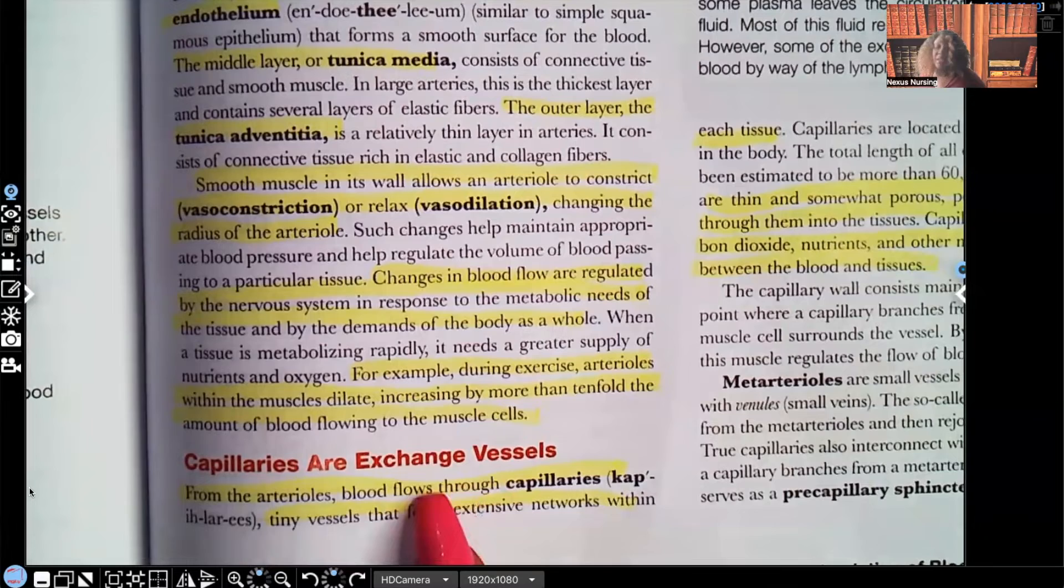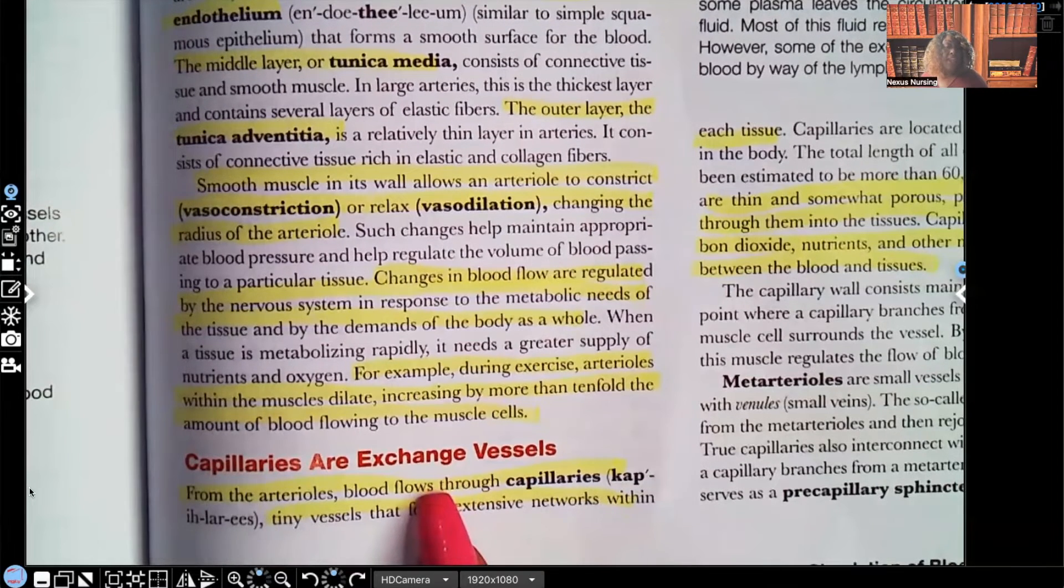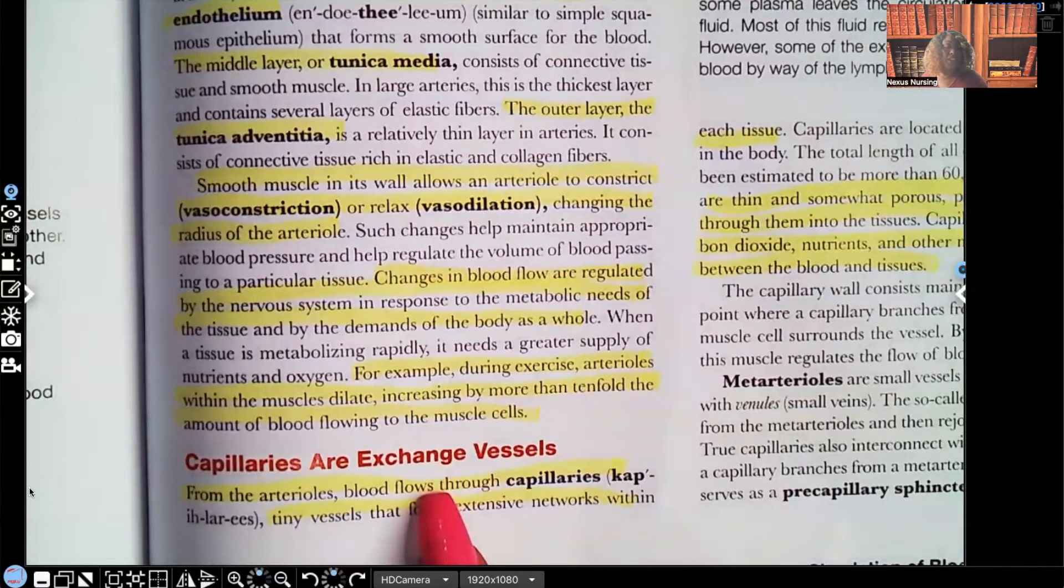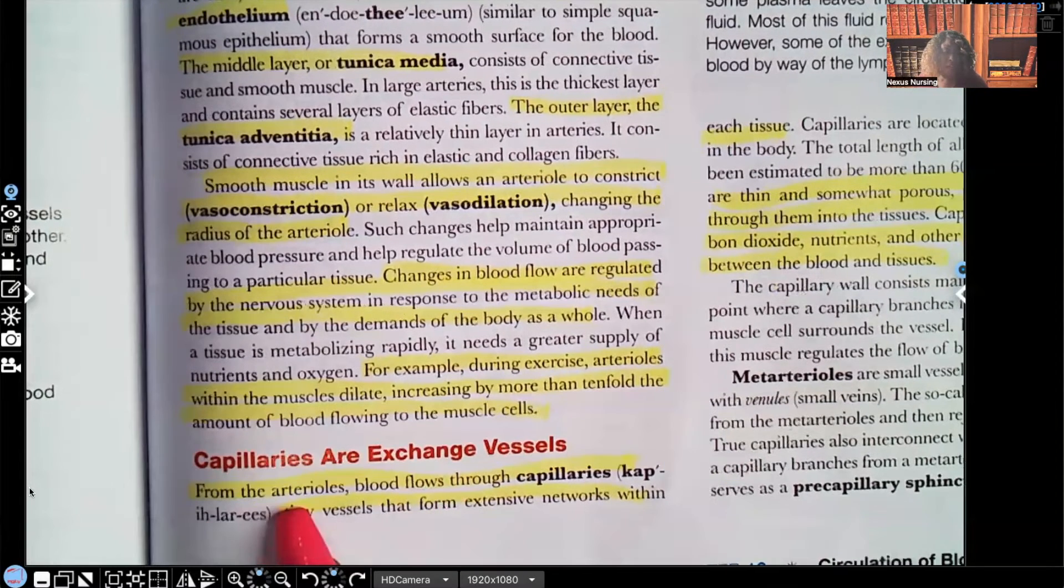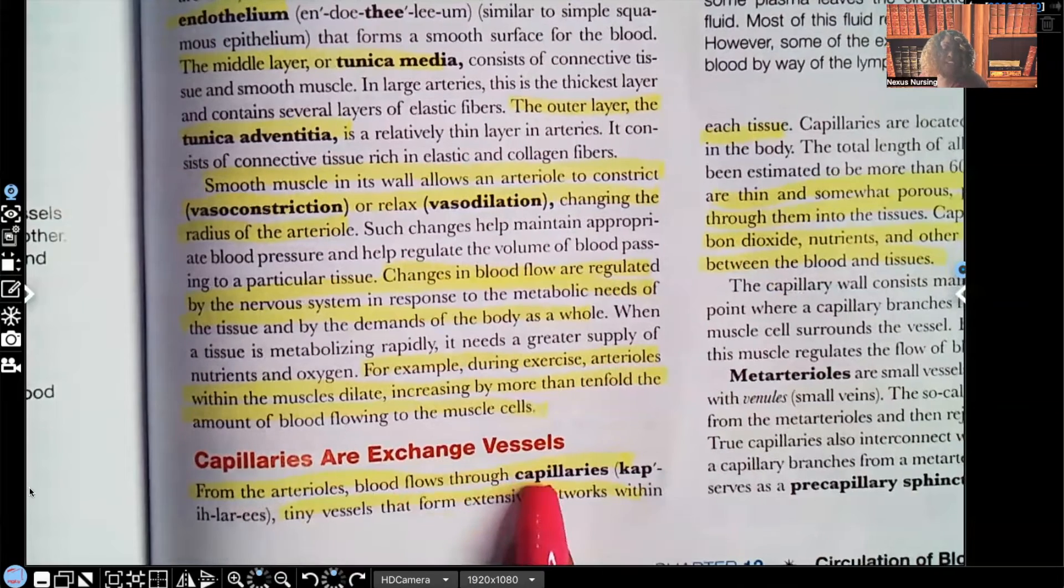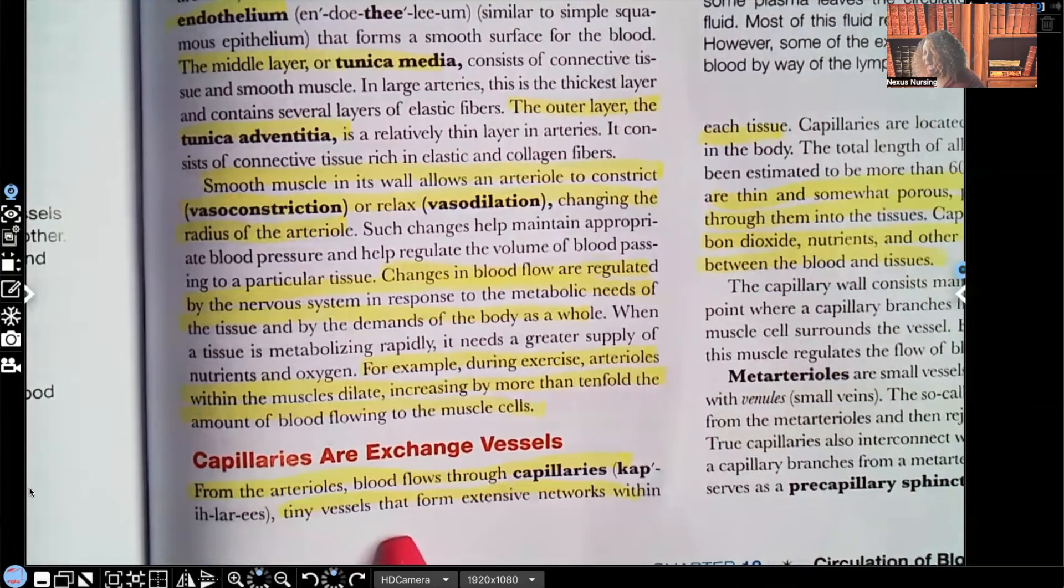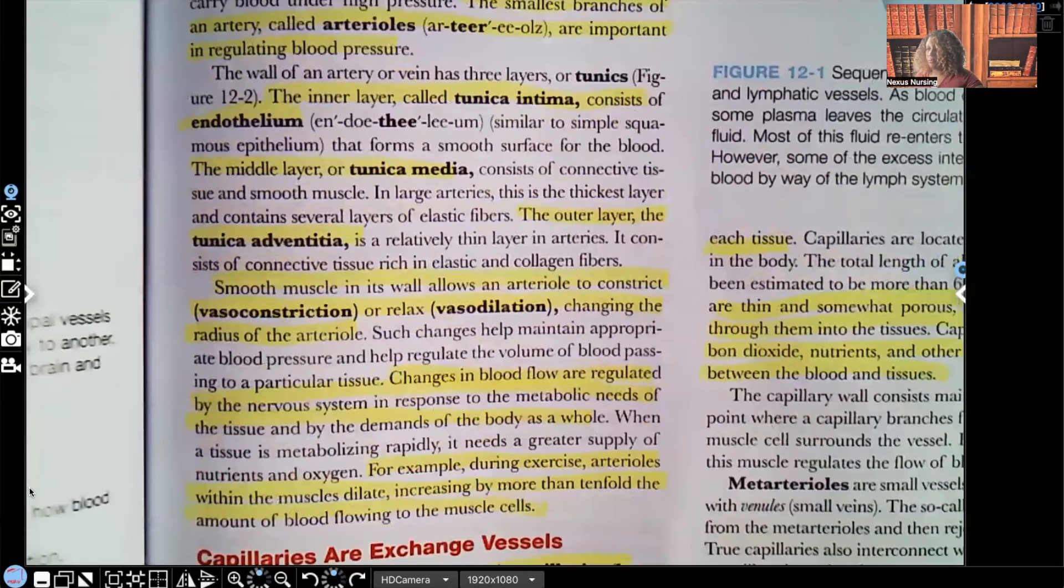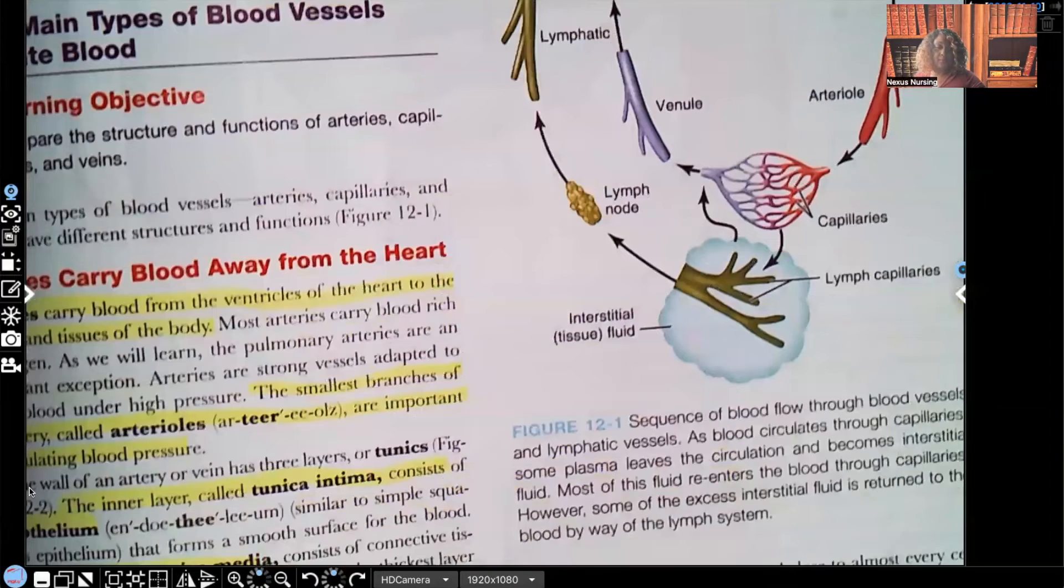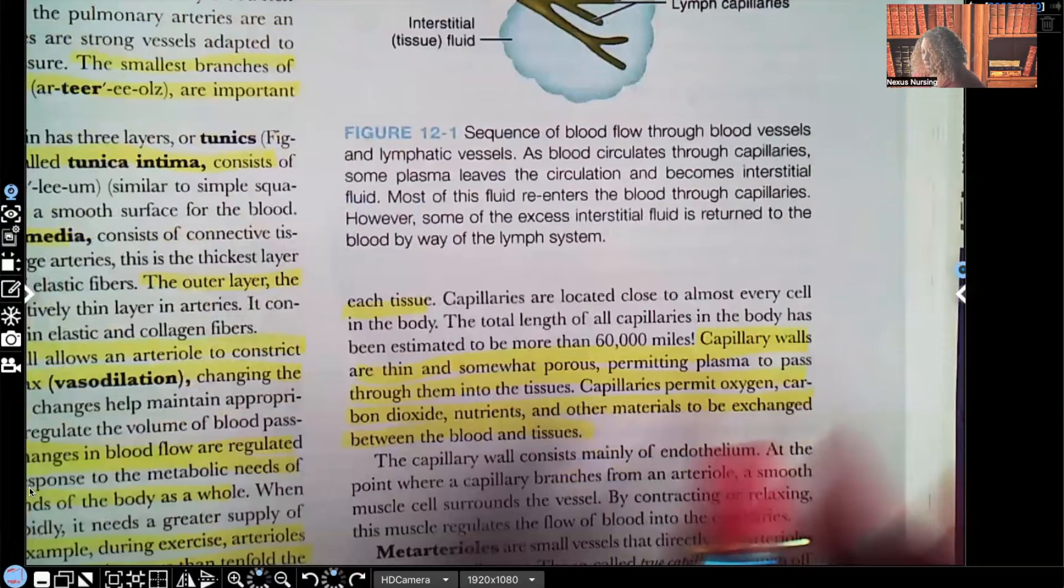Now, let's take a look at this. Capillaries. Capillaries are exchange vessels. So, remember how we talked about arterioles? Those are the smallest portion. They can constrict. They can dilate. From the arterioles, blood flows through capillaries. Now, capillaries, these are tiny vessels that form extensive networks within each tissue.